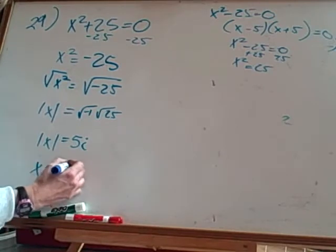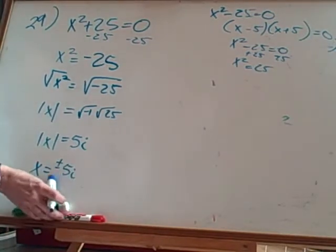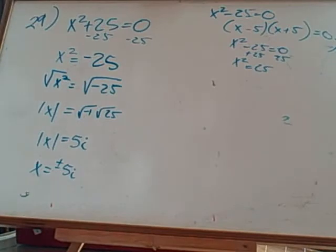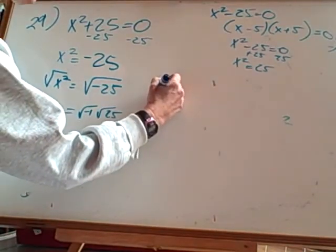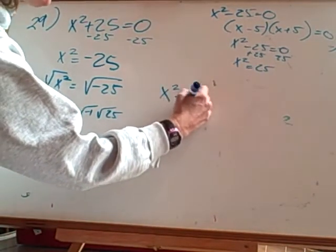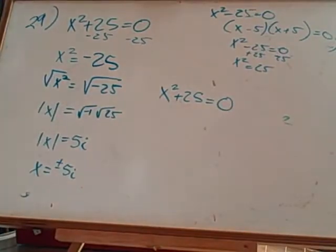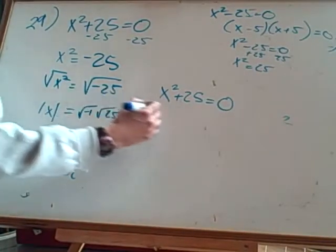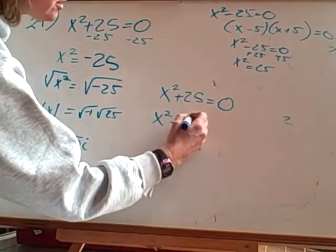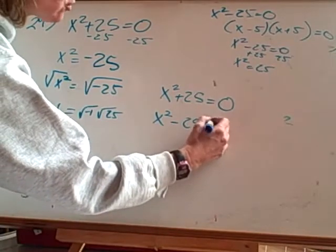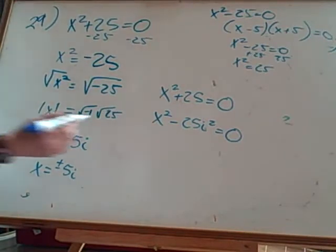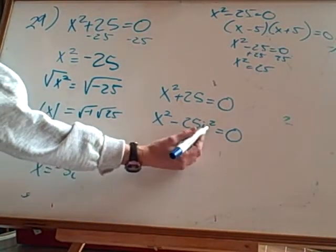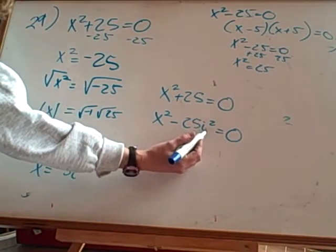Now let's look at that a different way. If I wanted to write x² + 25 = 0, I could write it as x² - 25i² = 0. What is i²? Negative 1. Subtracting a negative is the same as adding a positive. Now it's a difference of two squares.